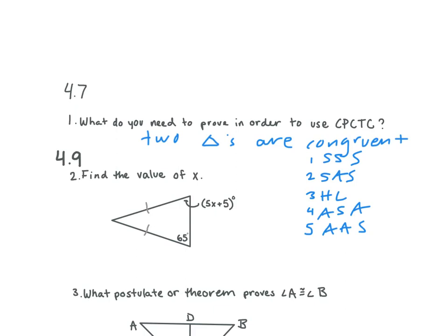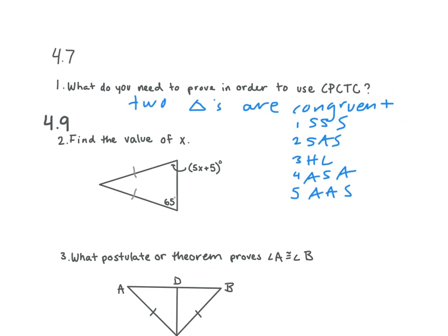Let's take a look at number two. How do we find the value of X in this isosceles triangle? 5X plus 5 is equal to 65. So when we subtract 5 from both sides, we get 5X is equal to 60. And what do we get for X? 12.